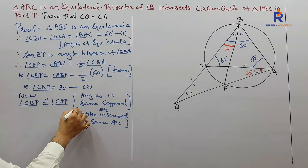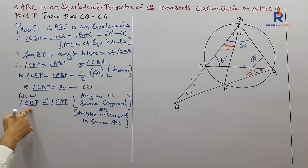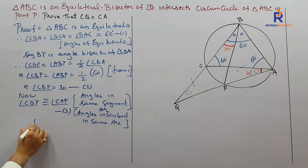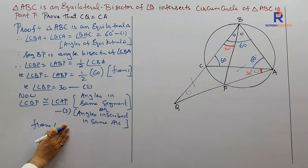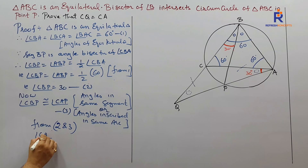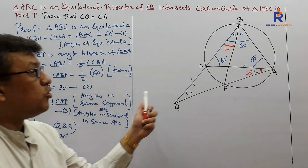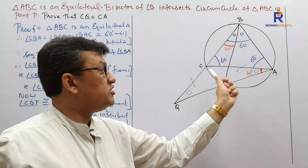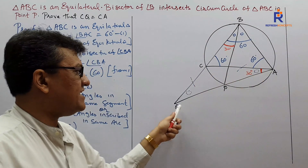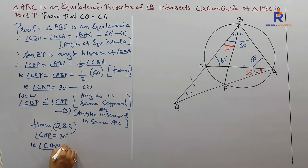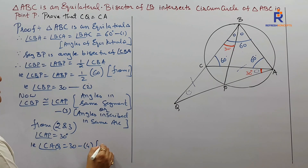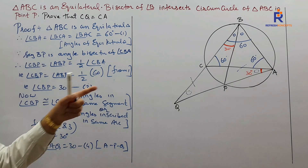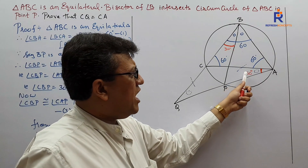CBP is 30°, and CBP equals CAP from equation three. So from equations two and three, CAP is also 30°. Since I want to work in triangle CQA, instead of saying CAP, I write CAQ equals 30°. This is equation number four.